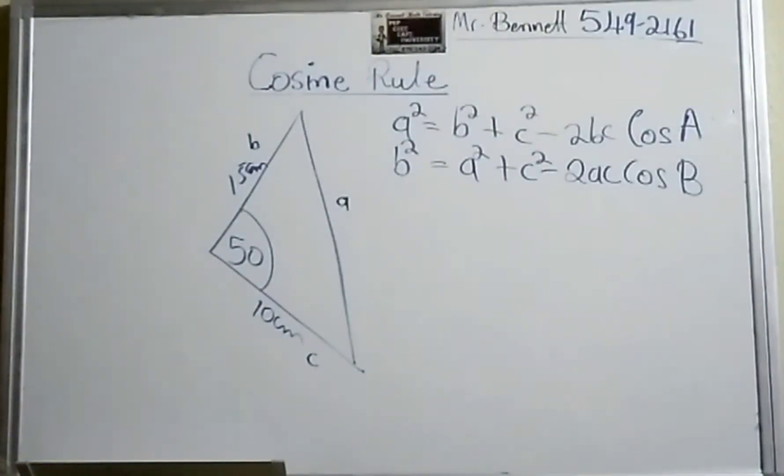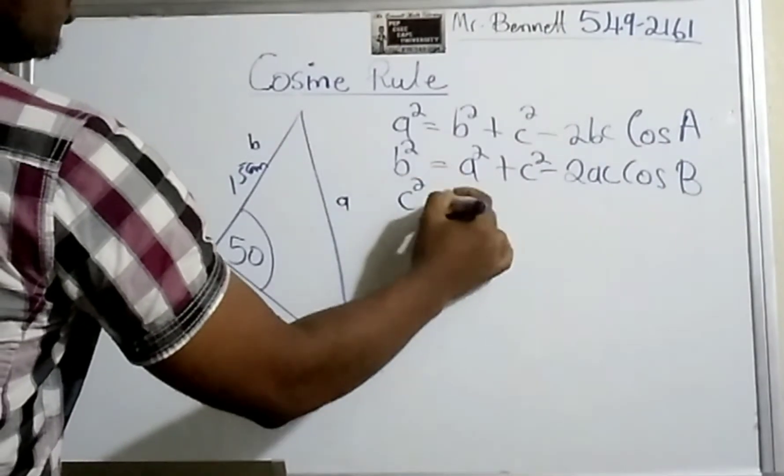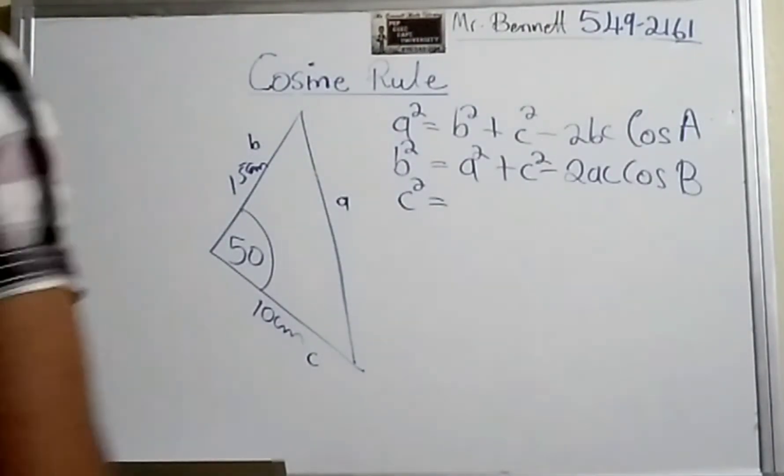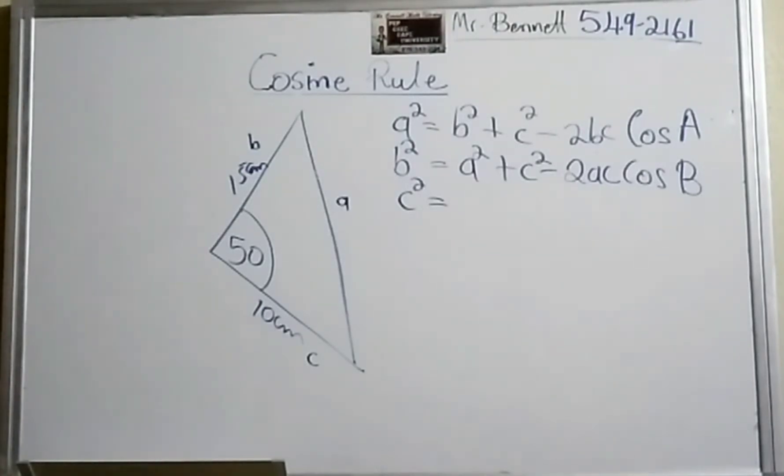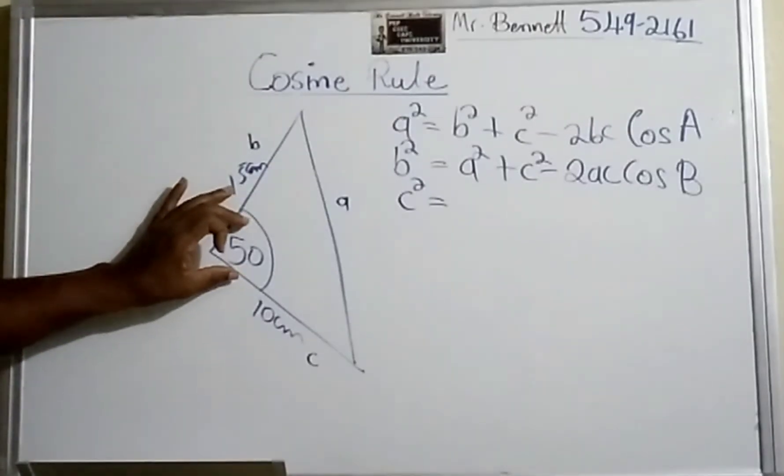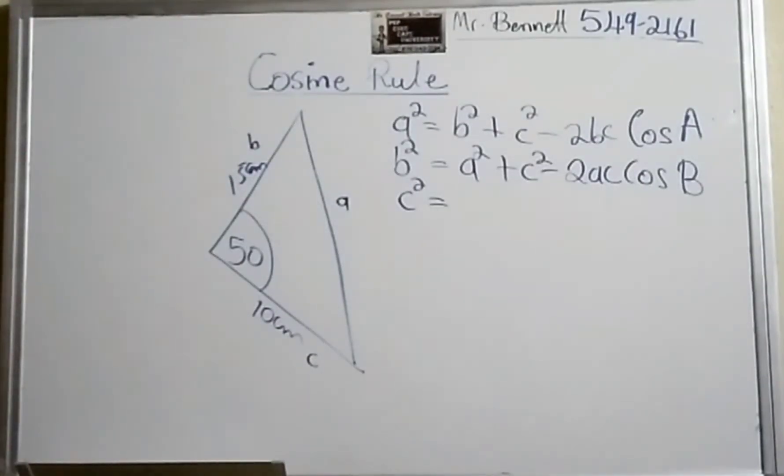You're going to do the third formula. So c² would be equal to what? Leave that in the comment section if you wish. As I say, it is very simple. Since I have this on the board, I'm just going to work this example. We are given two sides and an angle, and the angle is between the two known sides. Let's erase this.